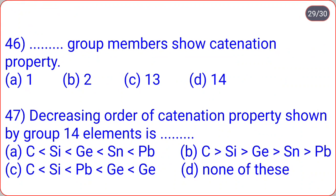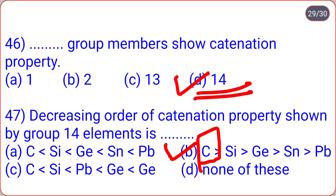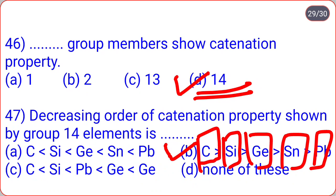Which group members show catenation property? That is group 14 (carbon group) — option D. The decreasing order of catenation property shown by group 14 elements is: carbon has the most catenation power, followed by silicon, germanium, tin, and lead — option B. Thank you for watching. Please comment how you liked this video, and visit my channel for more videos.